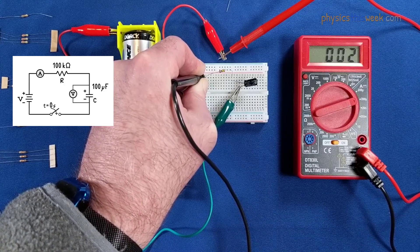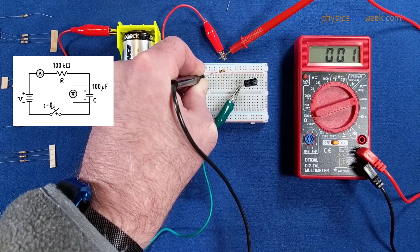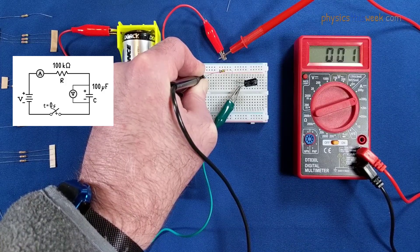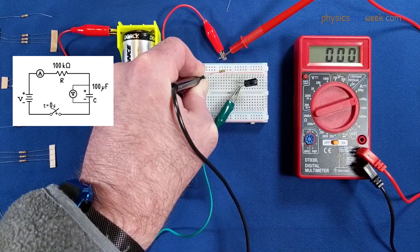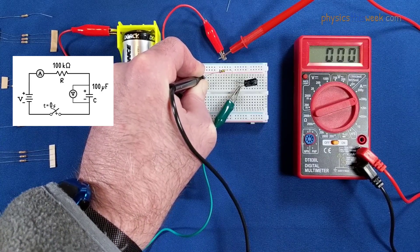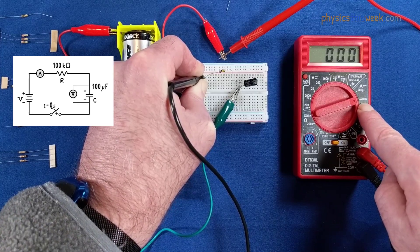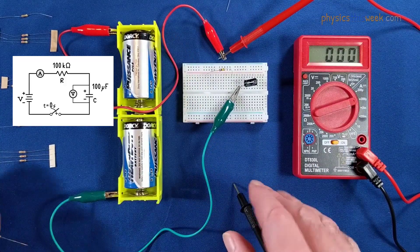Once again, that current slows down and goes down over time. Okay, and eventually it basically stops. Now, that was on the 2000 microampere setting.